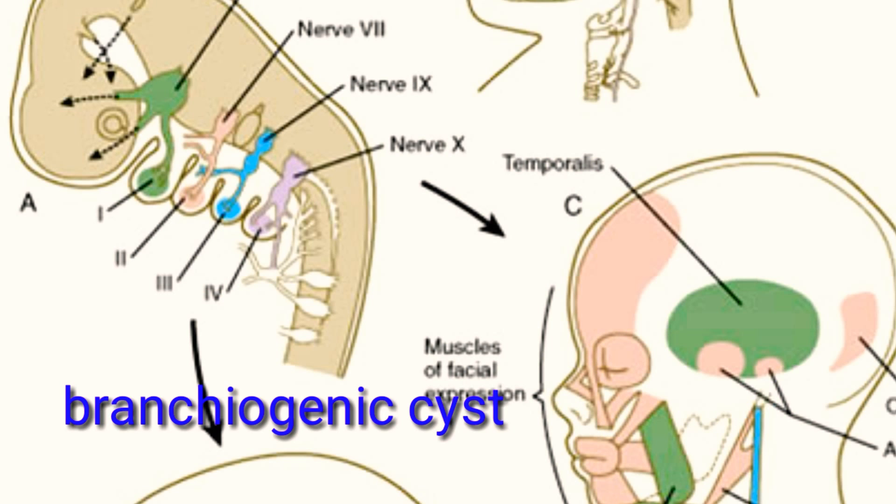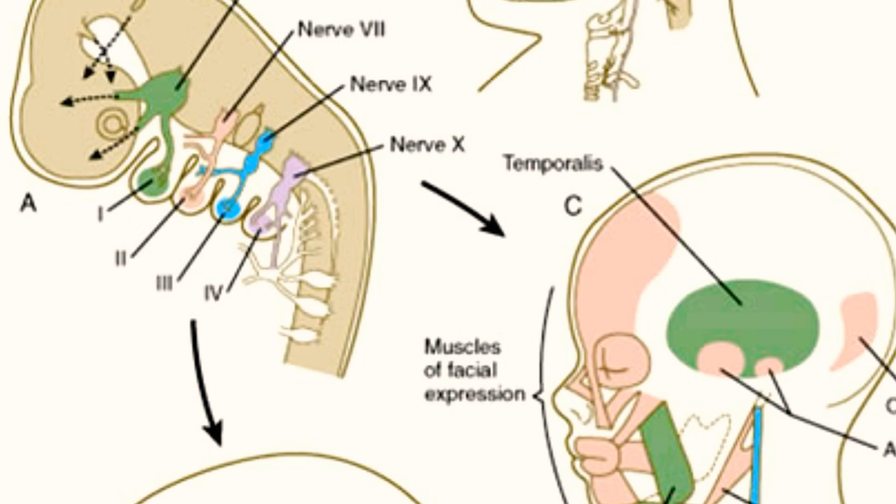Branchiogenic cysts: These cysts arise from defects in the second branchial cleft. They are located along the anterior border of the sternocleidomastoid muscle.